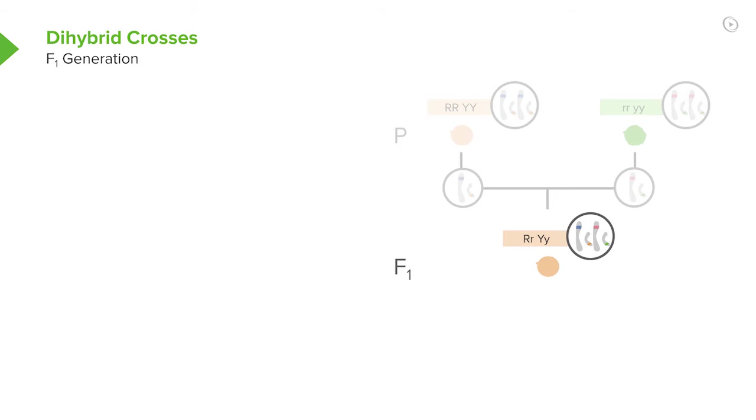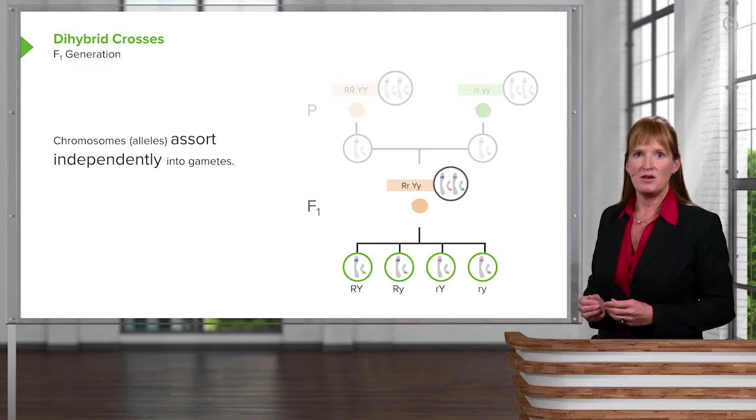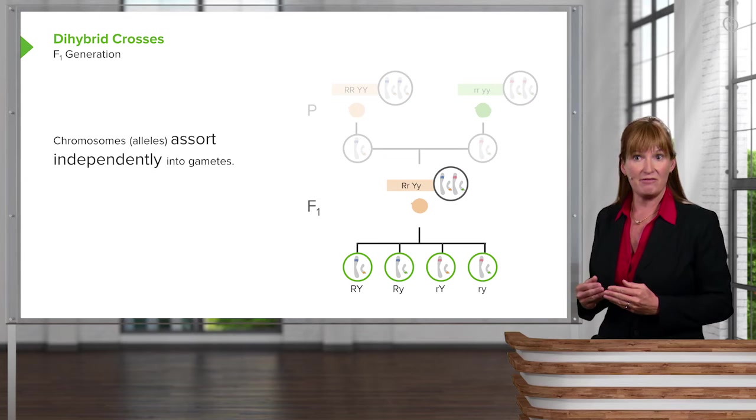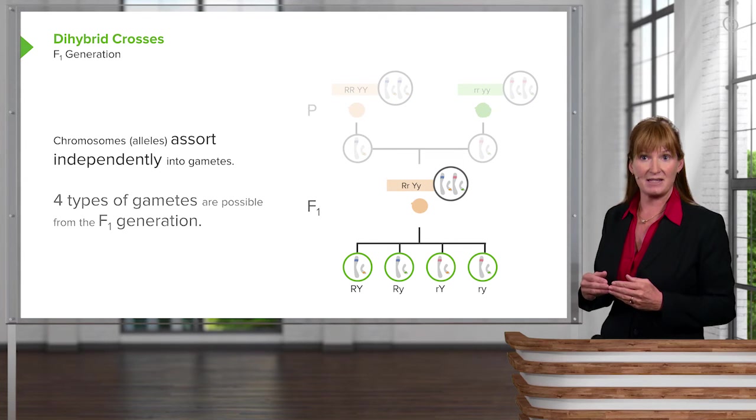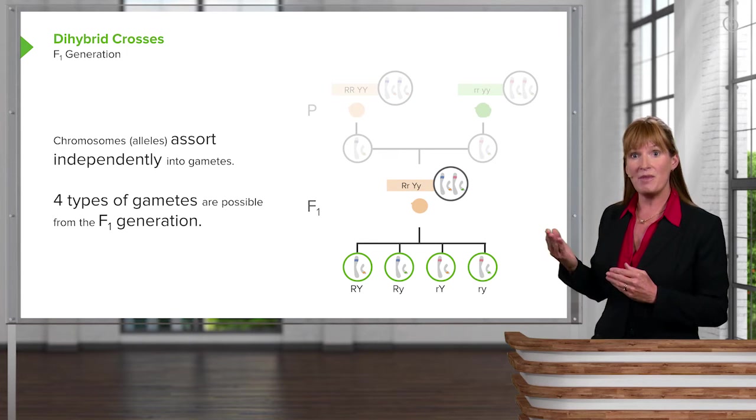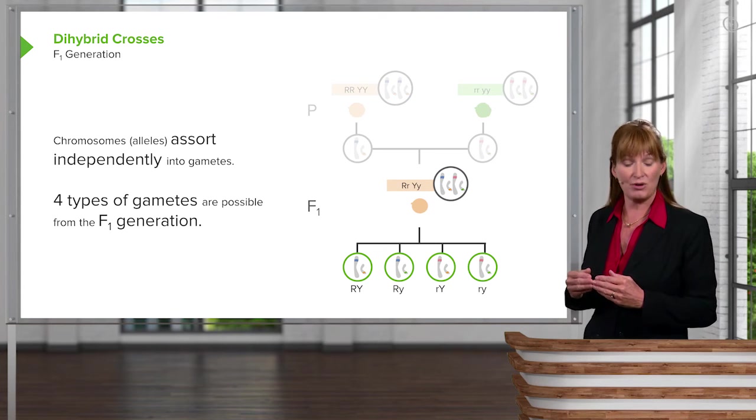So all of them will have the dominant characteristic, round and yellow, but will have the heterozygous genotype for that trait. So if gametes indeed assort independently from one another, you would expect that there could be four different types of gametes from the heterozygous F1 progeny.